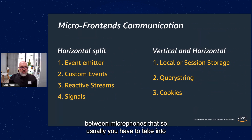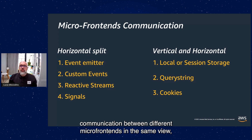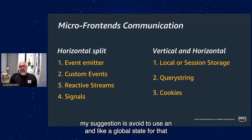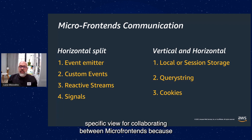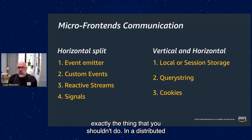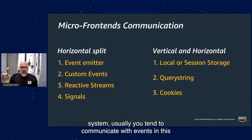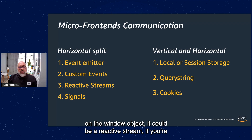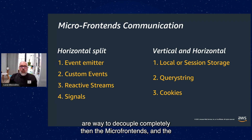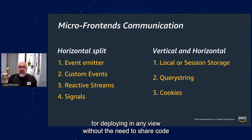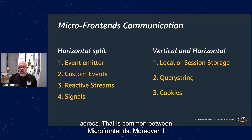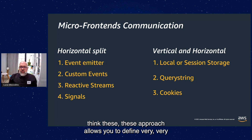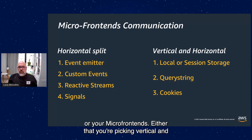For communication between micro-frontends, when you embrace horizontal split, you need to consider communication between different micro-frontends in the same view. My suggestion is to avoid using a global state for collaborating between micro-frontends, because that couples them — exactly what you shouldn't do. In a distributed system, you tend to communicate with events: an event emitter injected inside the micro-frontend, custom events appended on the window object, a reactive stream, or a signals library. All of these decouple the micro-frontends completely, and this approach allows you to define very clearly the inputs and outputs of your micro-frontends.